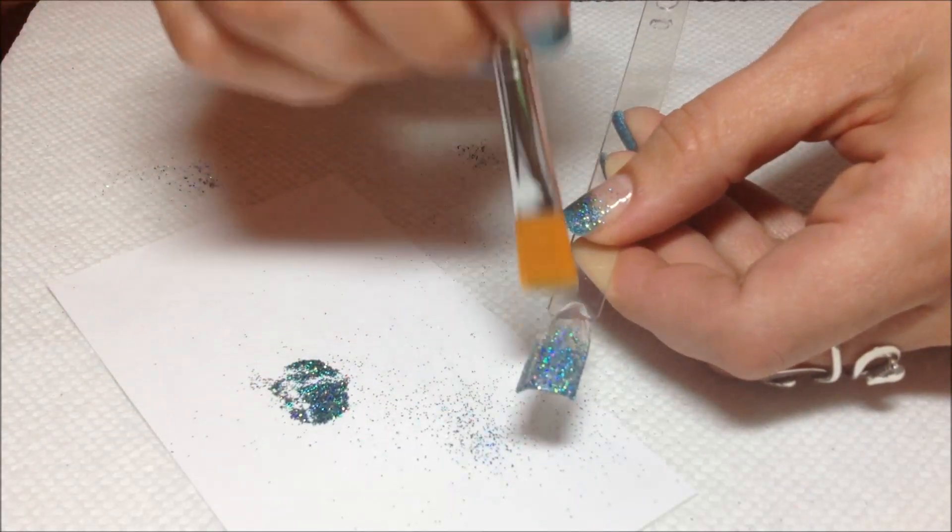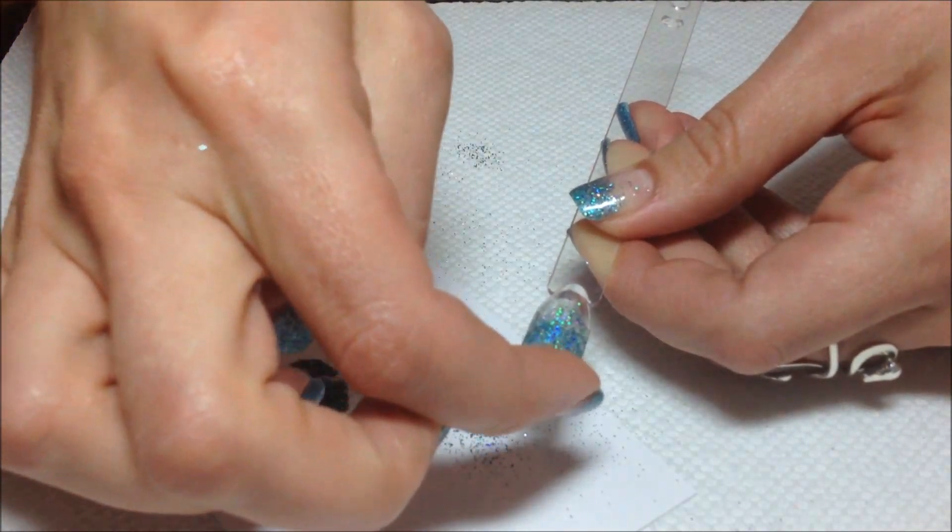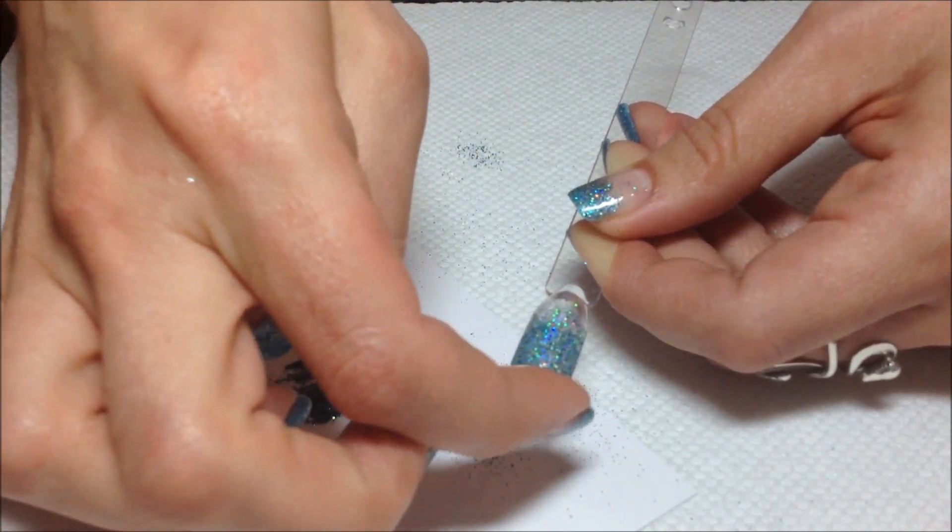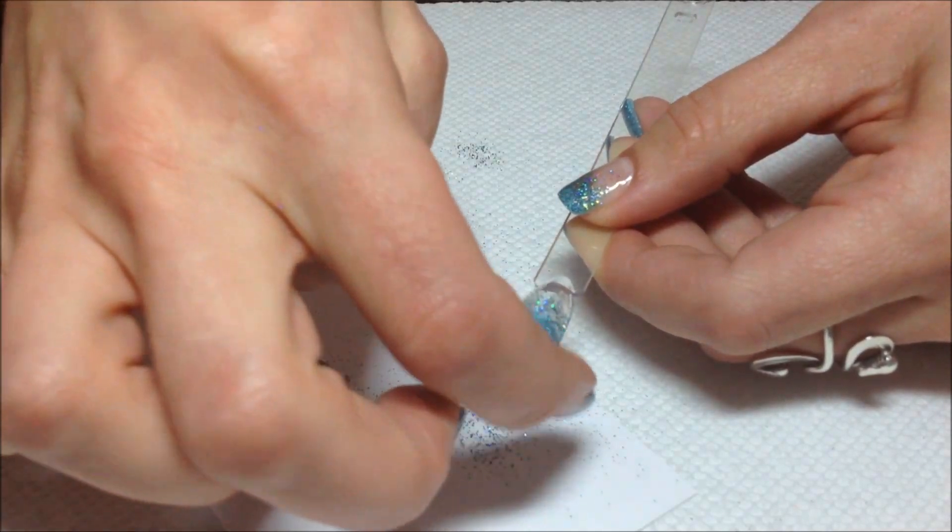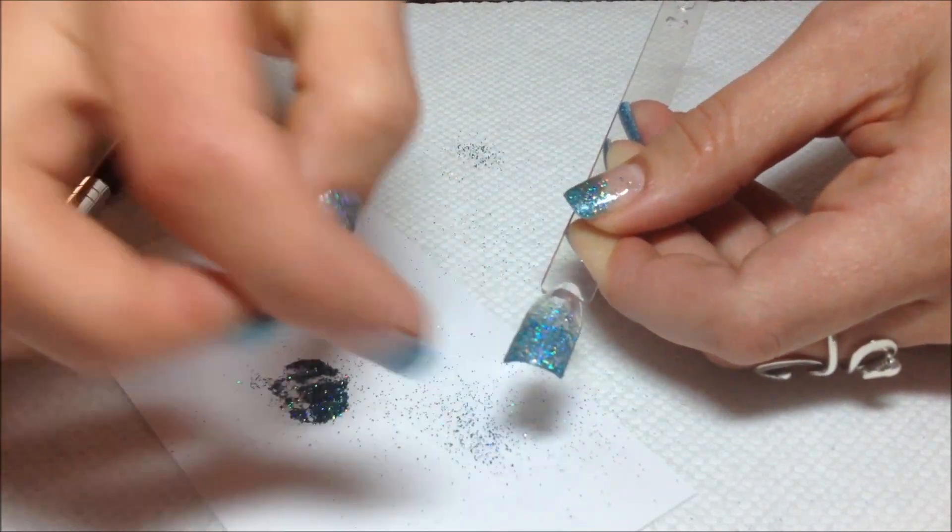Alright, I think that's pretty good. And I like to just tap the tip with my finger and just pat down any loose edges, any loose glitter that could be at the edge there so you don't have any snags.